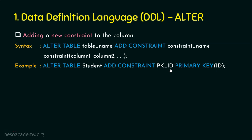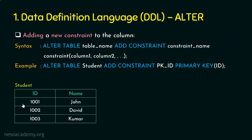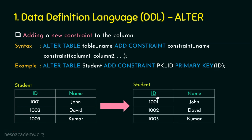After executing this ALTER command, the id column in the student table will be enforced with a primary key constraint. You may ask: what if the column already has duplicate or null values? In that case, adding the primary key constraint will not be accepted because the column is not eligible. To fix this, remove the null and duplicate entries first before executing the ALTER command.